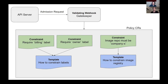And Gatekeeper must answer either yes or no. To do this, Gatekeeper consults its policy configuration, which is the large gray box at the bottom of the slide. The green objects labeled constraints tell the webhook what checks an admin wants to perform. Constraints rely on templates — the blue documents — to tell the system exactly how to perform the check. For example, they might say labels live in metadata.labels, so that's where you should validate labels.